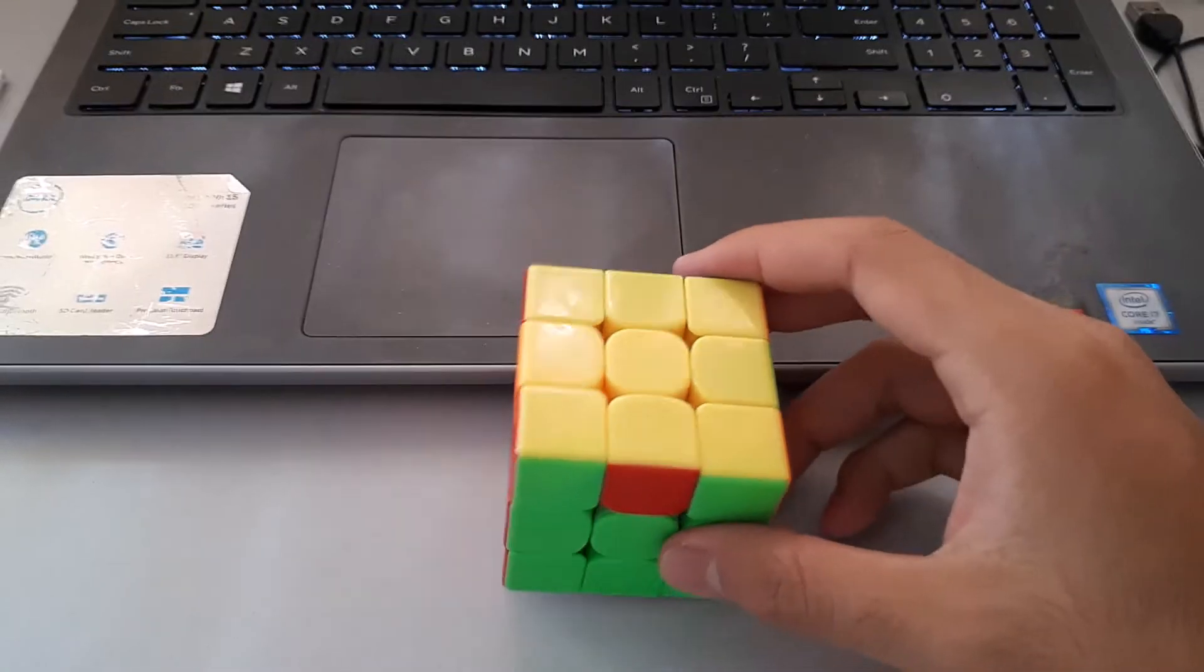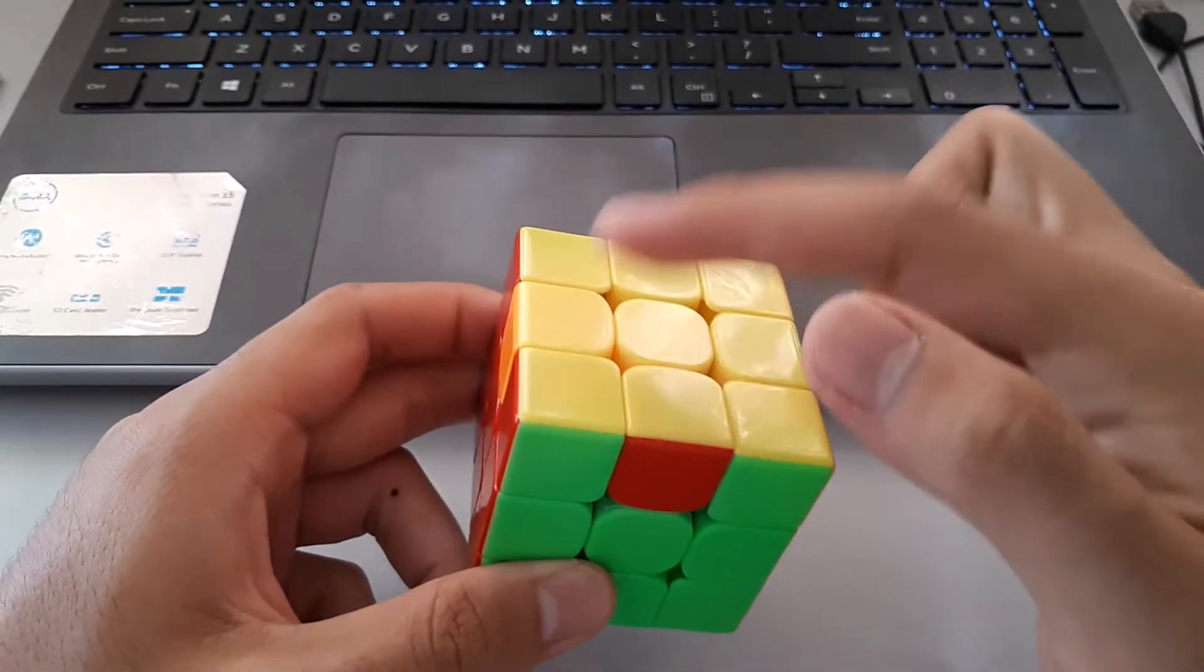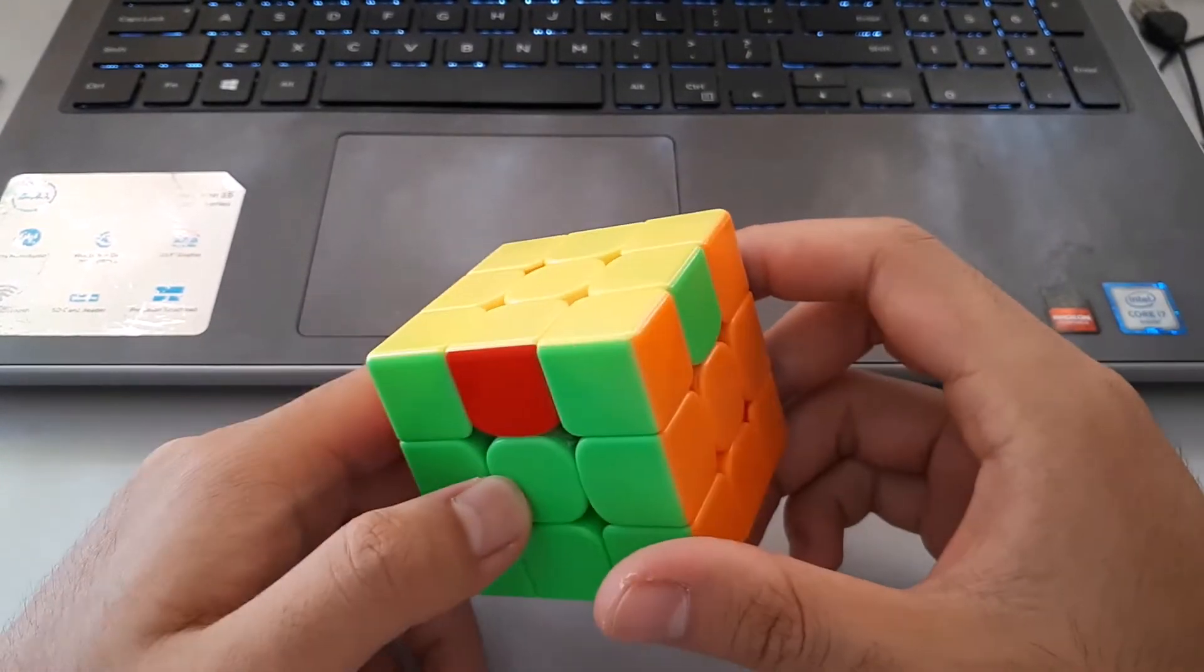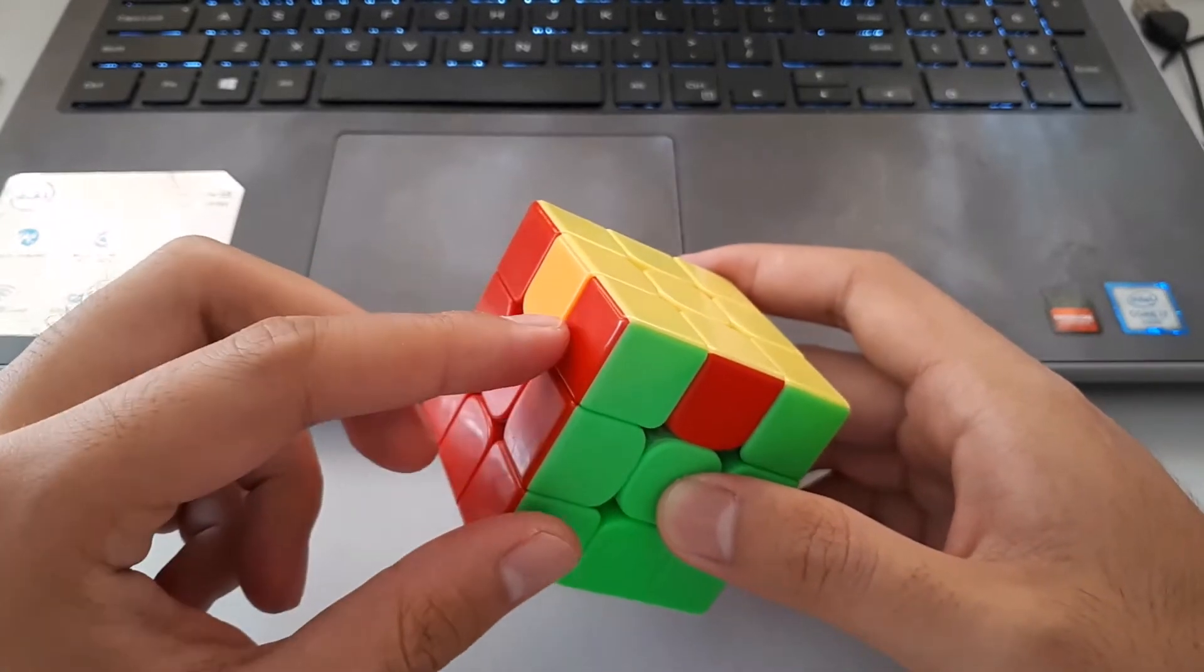So the other U-perm is this one here. This one has a clockwise cycle of edges going this way. This is the U-B perm, and an easier way to recognize it is the opposite colors here on the left hand side.